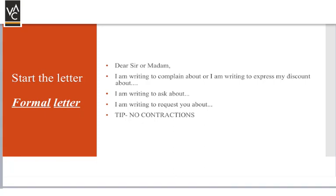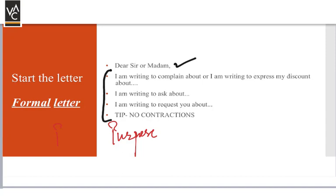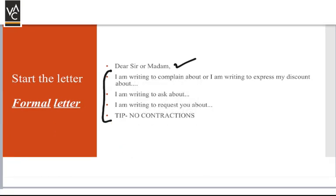For a formal letter, you need to talk straight by getting down to business right away. Do not try to be friendly — you do not know the person you are writing to. So we start by writing a purpose statement. You start with 'Dear Sir or Madam,' which is sometimes already provided in your answer sheet, and then quickly move to the purpose.